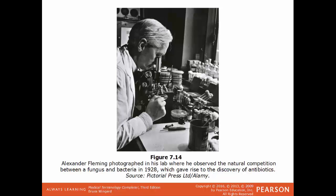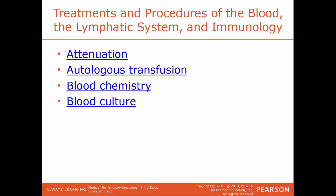Attenuation generally means to make something weaker. In immunology, this is how vaccines are prepared — a vaccine is the virus that causes the disease, made inactive or in a weakened form so it can't make you sick, but your body recognizes it and knows what to fight. Autologous transfusion is receiving a transfusion of your own blood — some people donate their own blood before surgery so they receive their own blood, not someone else's.